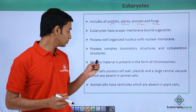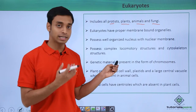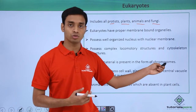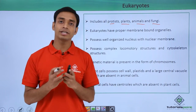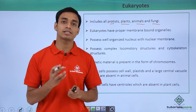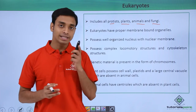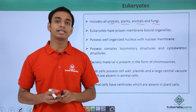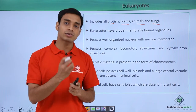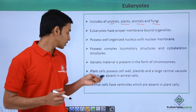The genetic material in eukaryotes is present in the form of chromosomes. The genetic material in eukaryotic cells is quite larger compared to that of prokaryotes, and these genetic materials are organized into proper structures known as chromosomes.